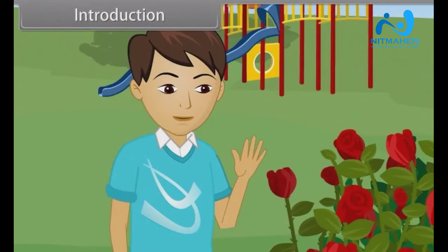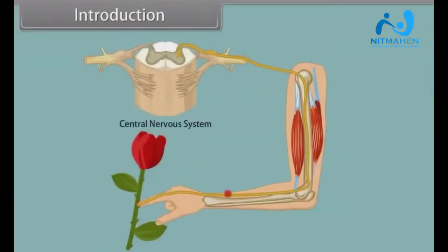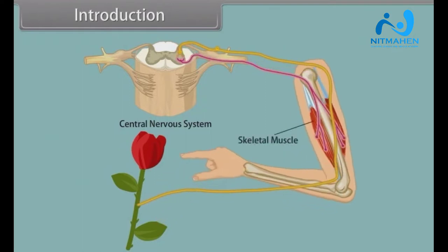What happened to him? Let's see more closely. When he touches the stem of the flower, the thorn on it pinches him and sensors detect stimuli present below the skin. This stimuli passes to the central nervous system and in response, the skeletal muscles contract and he withdraws his hand.